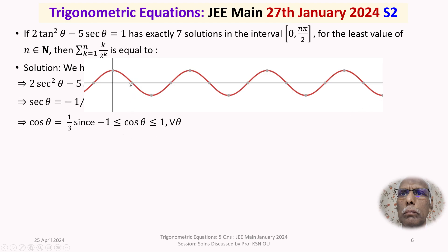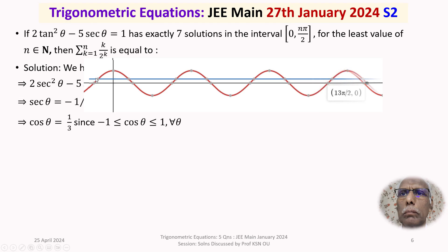On the cosθ curve, we mark π/2, 3π/2, 5π/2, 7π/2, 9π/2, 11π/2, and 13π/2. We draw the horizontal line cosθ = 1/3 (the blue line) parallel to the x-axis. This line intersects the cosθ curve at exactly 7 points up to 13π/2. Therefore the equation has exactly 7 solutions in the interval [0, nπ/2] for the least value n.